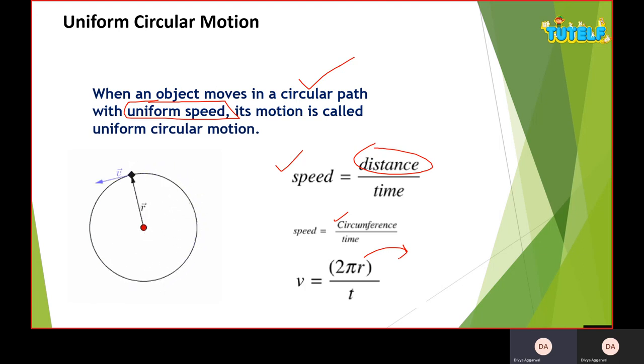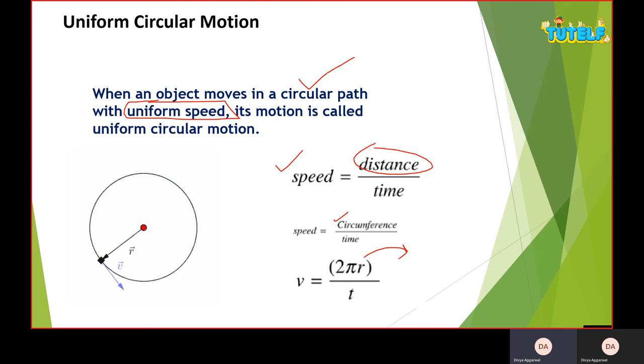I hope this is clear to you. Let's just do a quick summarization. Uniform circular motion: speed is constant, the direction is continuously changing, and the formula is v equals 2πr divided by t.